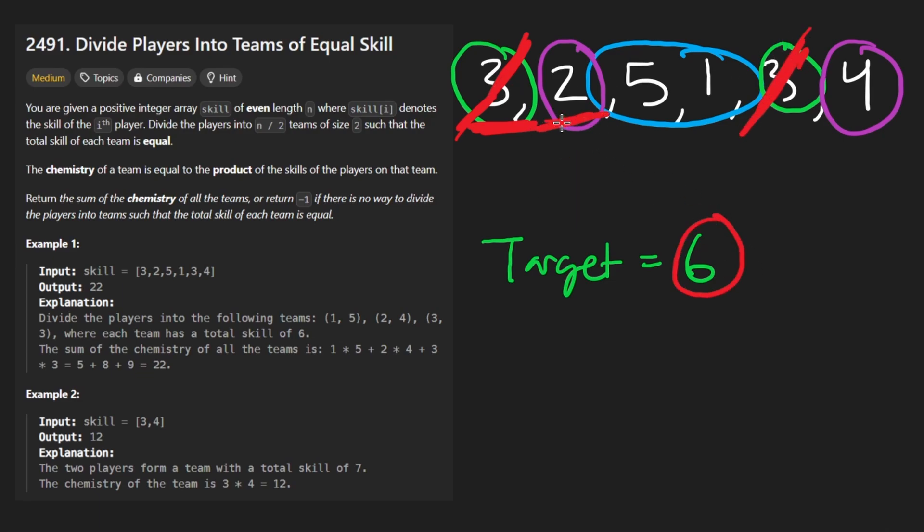And we go to the next element, 2. The diff is going to be 6 minus 2. That's 4. Do we have a 4? Yep, we do. So kind of cross that out. Same thing here. 5, we have a 1. And then we're good. If we didn't have a 1, if we had a 2 instead, at this point, we would have to return negative 1, because there isn't a solution.